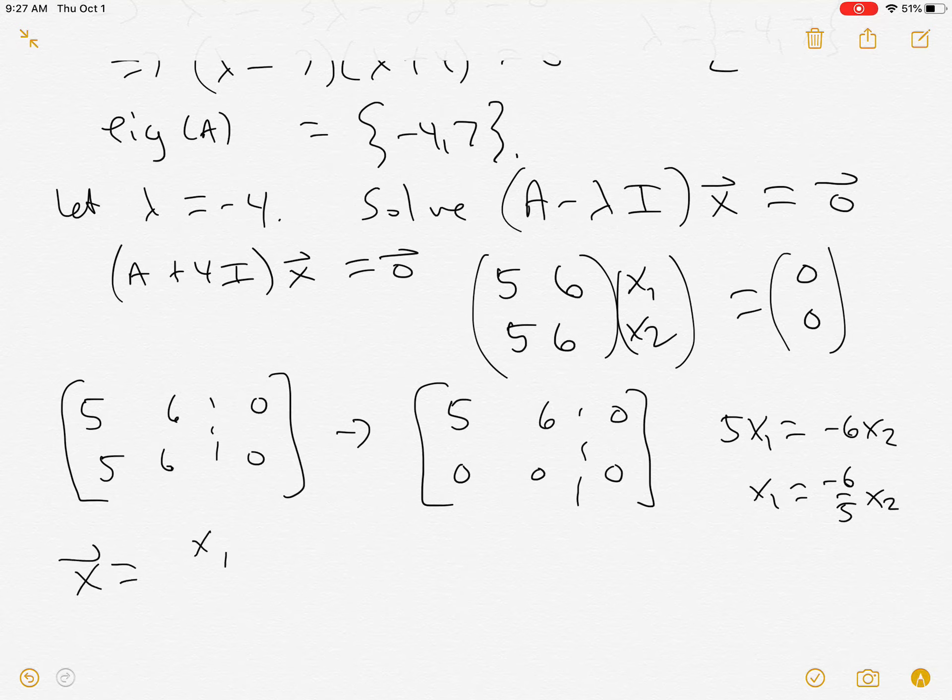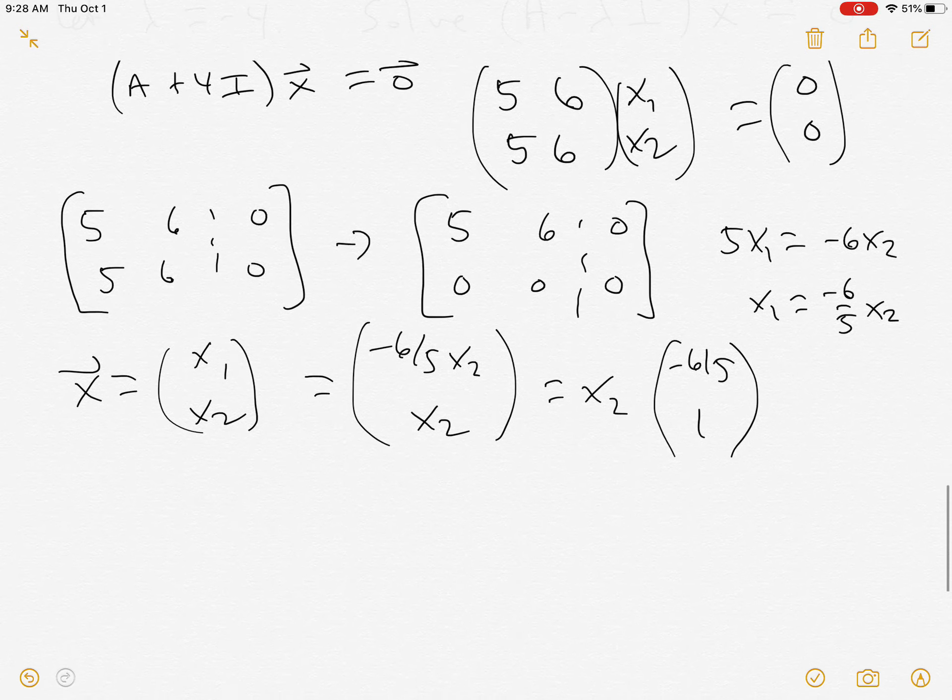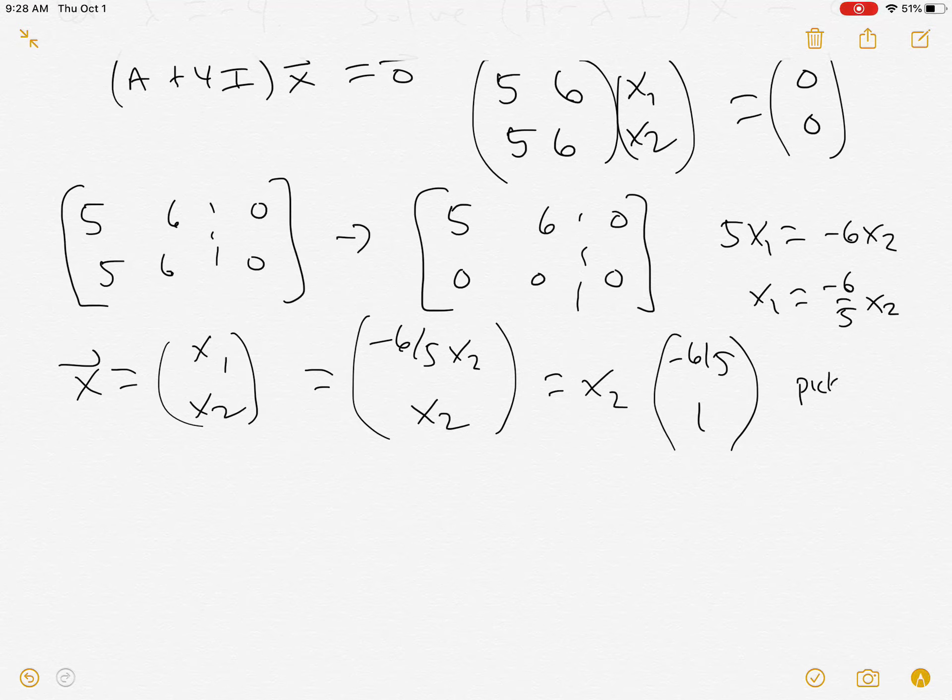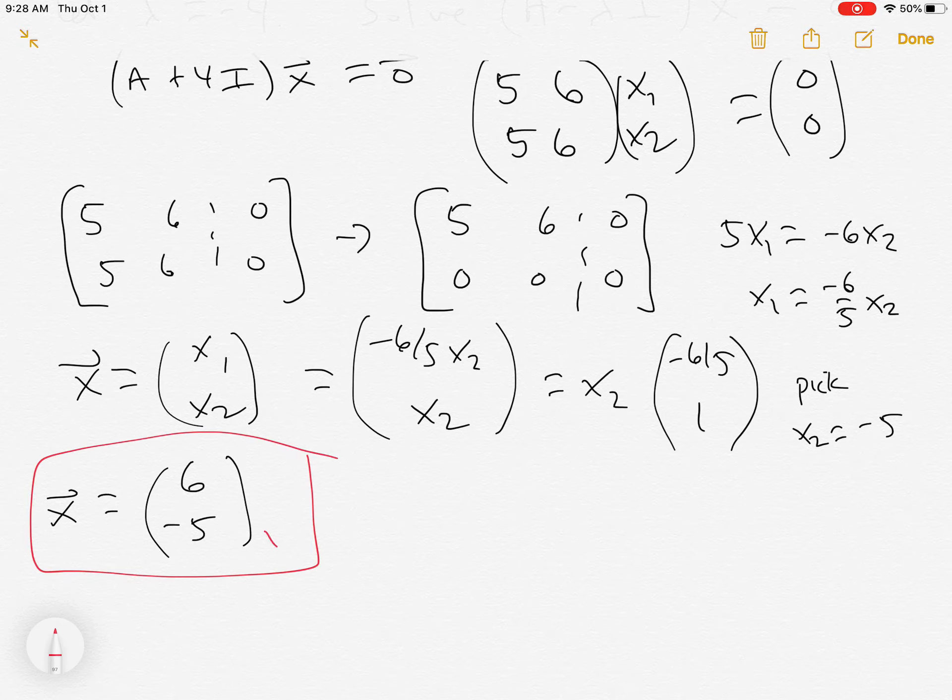So x is (x1, x2), this is (-6/5 x2, x2), which is x2(-6/5, 1). So any value I choose for x2, which is my free variable, will give me an eigenvector corresponding to -4. So it's nice if you pick it to make your entries integers. So I'm going to pick x2 to be -5. And so x now equals (6, -5). And we have found this is the eigenvector corresponding to lambda equals -4.